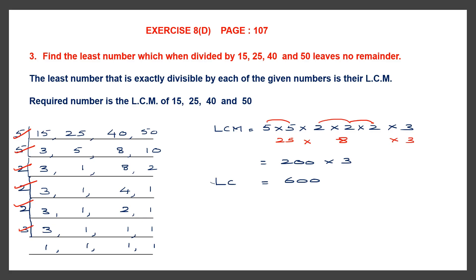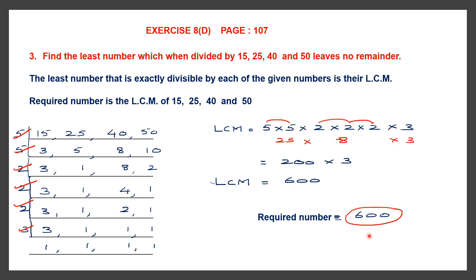So we have LCM equal to 600. That means the required number is 600. That is our answer. The least number is 600. If you divide 600 by 15, 25, 40 and 50, there will be no remainder, and this is the least number.